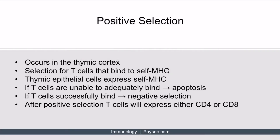Let's start with positive selection. Positive selection occurs in the thymic cortex, and the main idea is to allow only the T-cells that can bind to self-MHC to survive — it selects for T-cells that bind to self-MHC. This makes intuitive sense because T-cells must bind to our own cells in order to function properly. A T-cell unable to recognize self-MHC molecules would be a completely ineffective immune cell. Positive selection is all about helping T-cells focus on only those antigens that are presented by MHC.